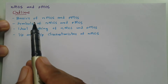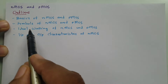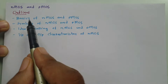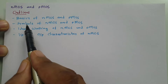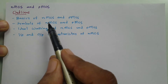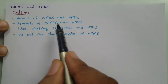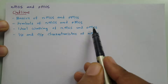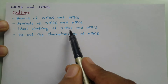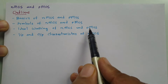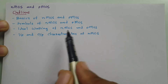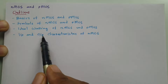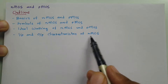To understand NMOS and PMOS, these are the session outlines: first, I'll discuss the basics of NMOS and PMOS; after that, I'll explain different symbols associated with NMOS and PMOS; then the ideal working of NMOS and PMOS, showing how they can be short circuit or open circuit; and finally, the input and output characteristics of NMOS.